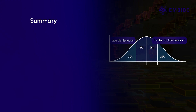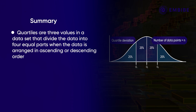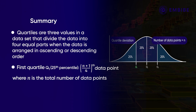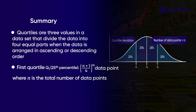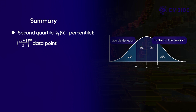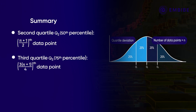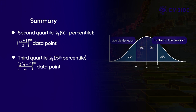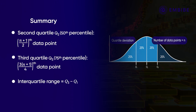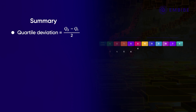Let's summarize what we've learned. Quartiles are values that divide the data into four equal parts when arranged in order. Q1 is at the (n+1)/4th position, or the 25th percentile. Q2, the 50th percentile, is the median. Q3, the 75th percentile, is at the 3(n+1)/4th position. The difference between Q3 and Q1 is the interquartile range, and the quartile deviation is half of that difference.